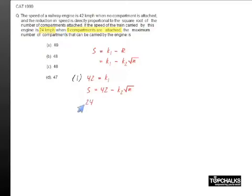means if I apply this in the equation, I will get 24 equals 42 minus k2 times square root of 9, or k2 is equal to 6. Now we can write this equation for S as S equals